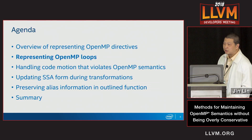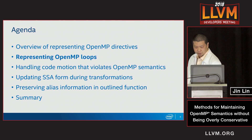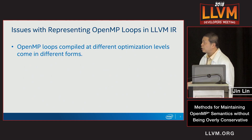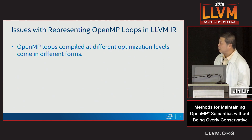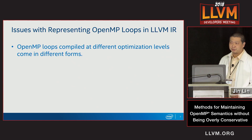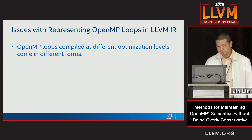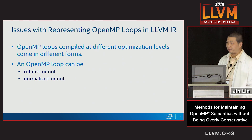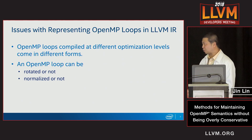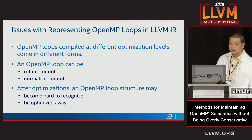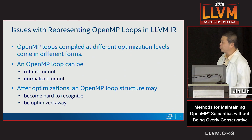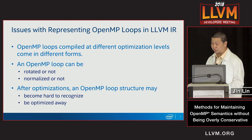Similarly, the compiler also needs to model the OpenMP loops. The representation of OpenMP loops needs to take into account the following cases: OpenMP loops might be compiled at different optimization levels, so they will come in different forms. The OpenMP loop can be rotated or may not be rotated, or can be normalized or may not be. After optimization, the OpenMP loop structure might be hard to recognize, or maybe optimized away because of dead code.